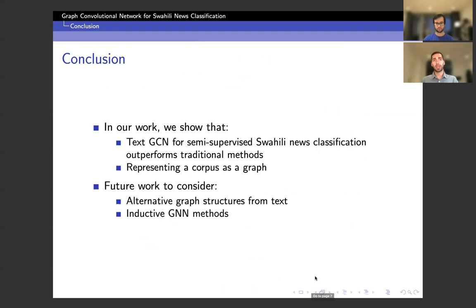So in conclusion, in our work, we implement two versions of a text-GCN for a semi-supervised Swahili news classification task. And we find that these models outperform a variety of traditional methods, especially when only a small number of labels are used. And our work demonstrates the implicit graph nature of a set of documents, which is exploited by the text-GCN model and is an interesting direction for document classification tasks.